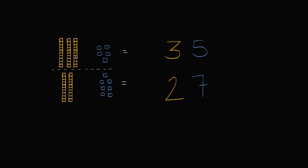So I have two numbers here. The top number, I have one, two, three tens, and I have one, two, three, four, five ones. Three tens, five ones, or 35.